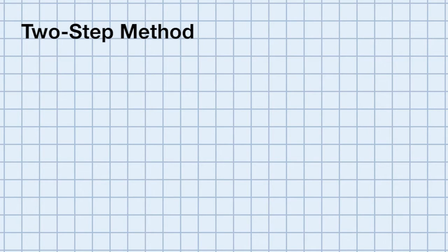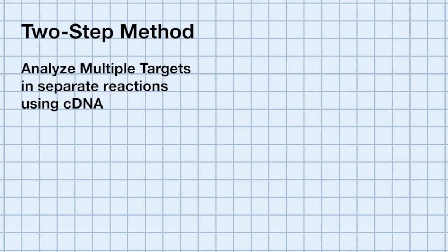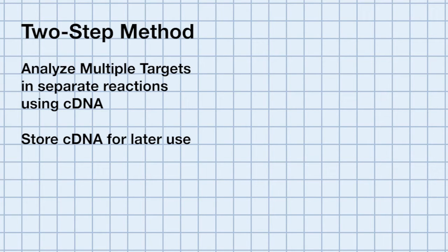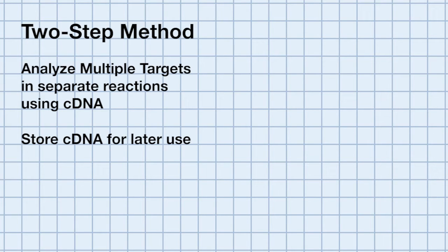So how do you know which method to choose? The two-step method is required when analyzing multiple targets in separate reactions using the same cDNA. For instance, one cDNA synthesis could be used to detect 10 different gene expression targets. You can also store the cDNA for later use with a two-step approach, and this is the preferred method for use with limited sample quantities.